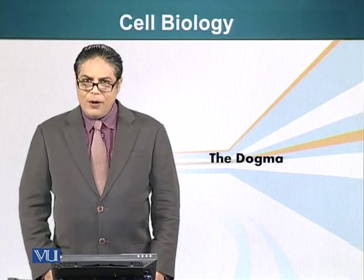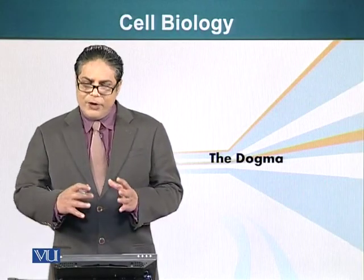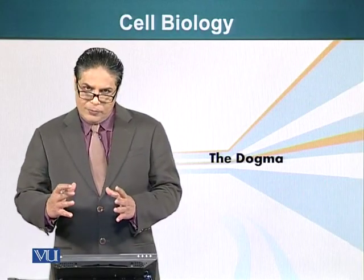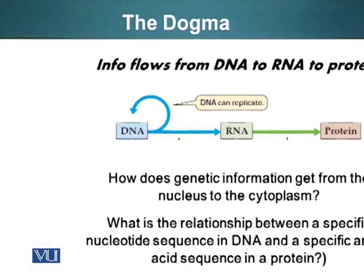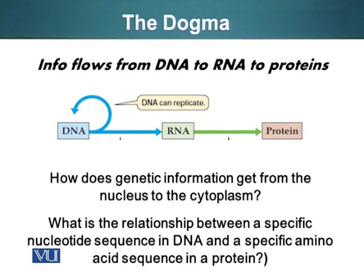Now let's look at the central dogma of molecular biology. The dogma states basically that DNA contains the information — genetic information — heritable information which is transmitted from one generation to the next.